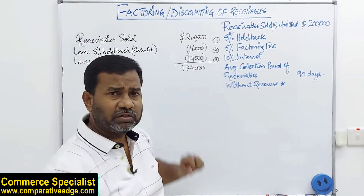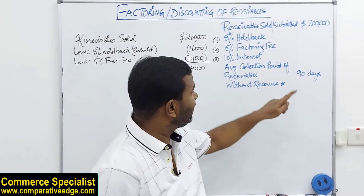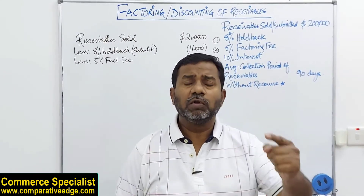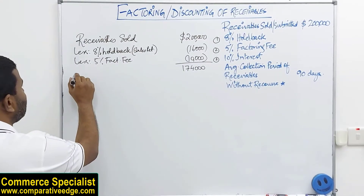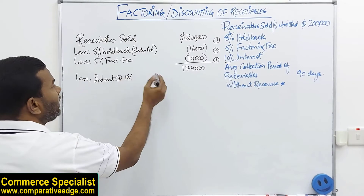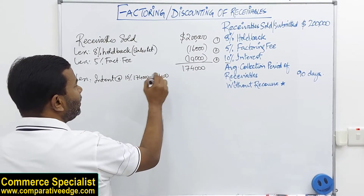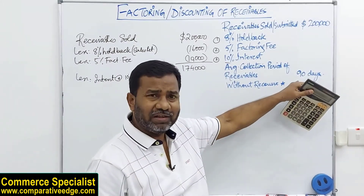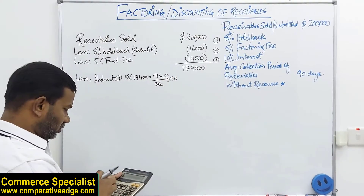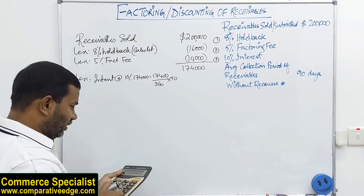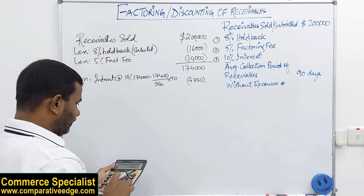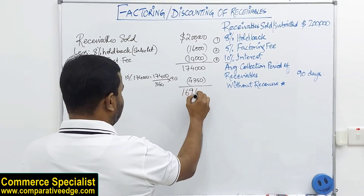The factor is giving me an amount now but will be waiting 90 days — the average receivable collection period. So they will also reduce interest. The interest rate is 10%, so 10% of 174,000 is 17,400 — but this is for the whole year. We are only talking about 90 days, so: 17,400 divided by 360 multiplied by 90 gives us 4,350. Therefore 174,000 minus 4,350 gives the funds I will actually receive from the factor right now.